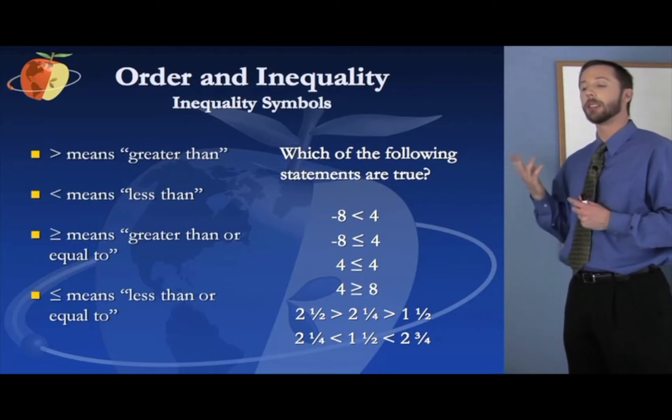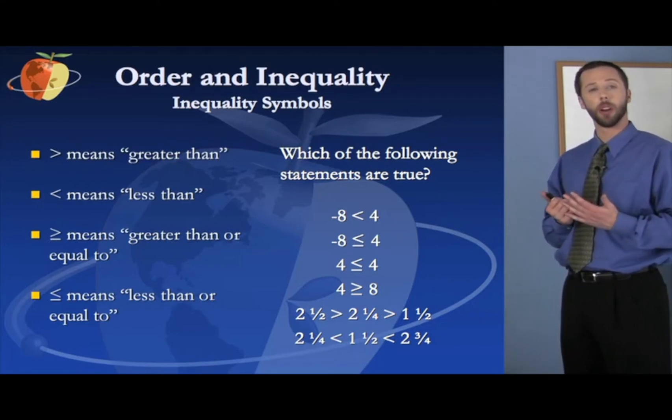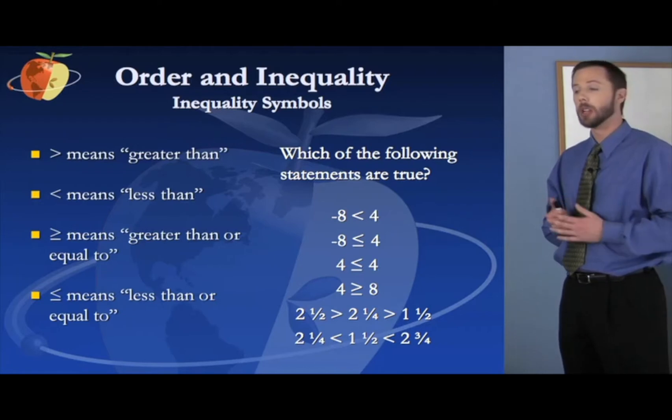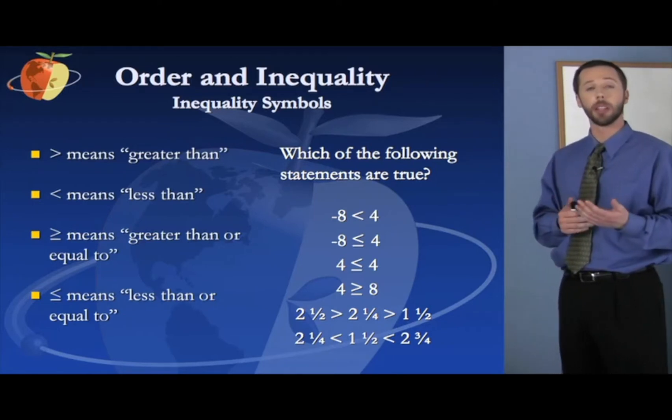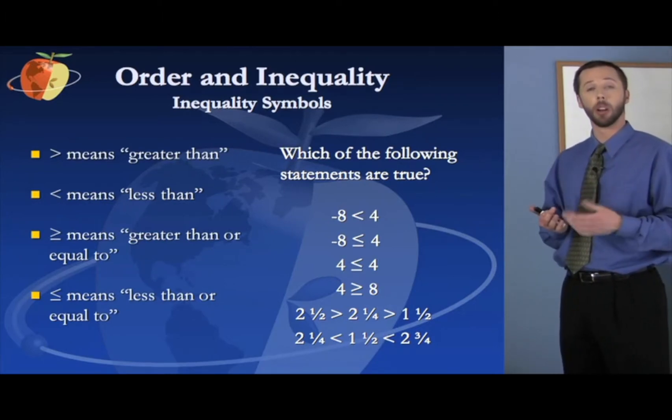So let's look at these statements and evaluate which ones are true. Negative eight is less than four. True or false? Yes, that's true. Any negative number is less than any positive number right off the bat. So it doesn't matter that eight is a bigger number than four, it's negative eight. So it is less than four.